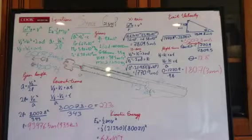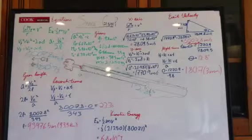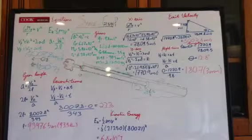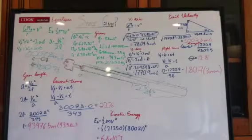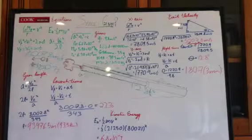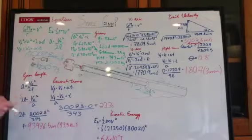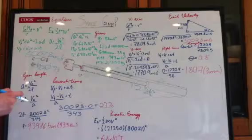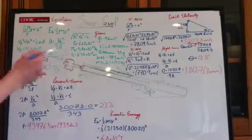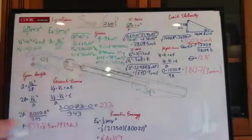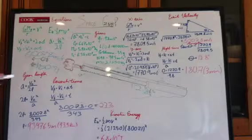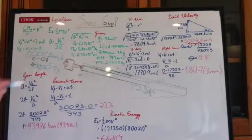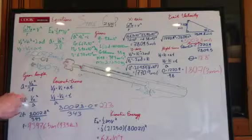For the gun length, we're going to use our new equation, which is A equals V squared over 2L. Move this to solve for L. We're going to plug in the velocity we found from here, which is 8,007.8 meters per second. That's going to be over A,